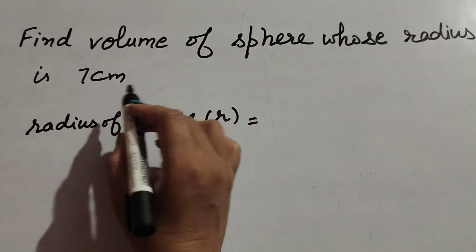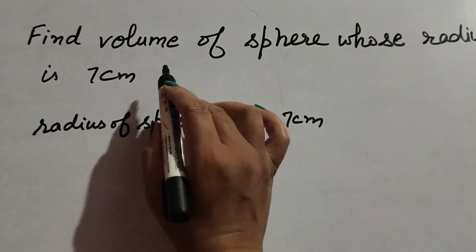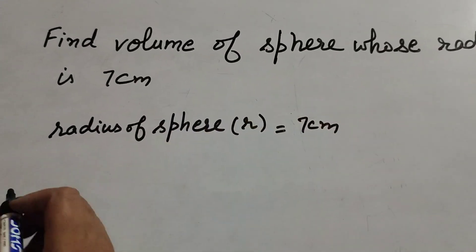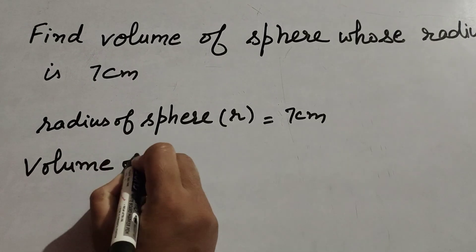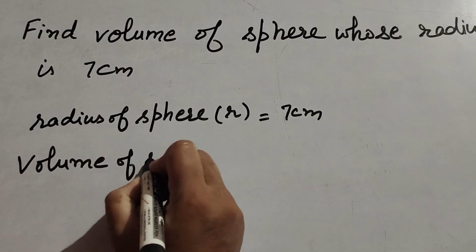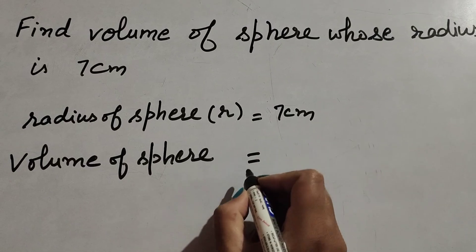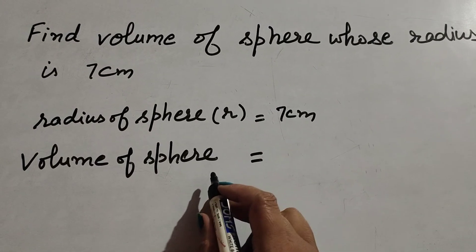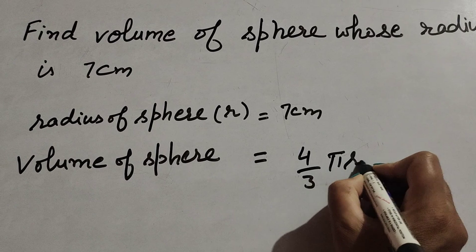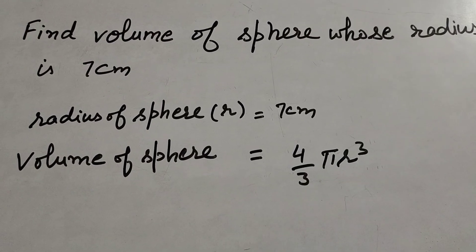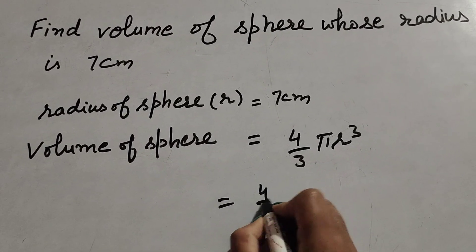The radius is given as 7 centimeters. To find the volume of the sphere, we know the formula: volume of sphere equals 4 over 3 pi r cubed.